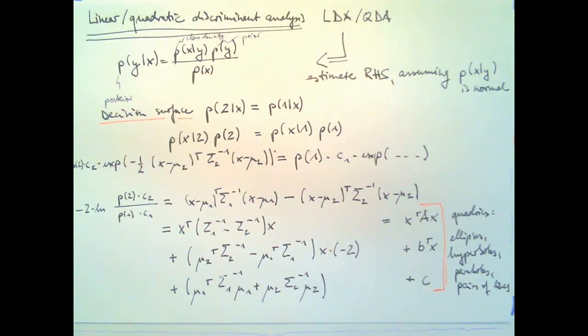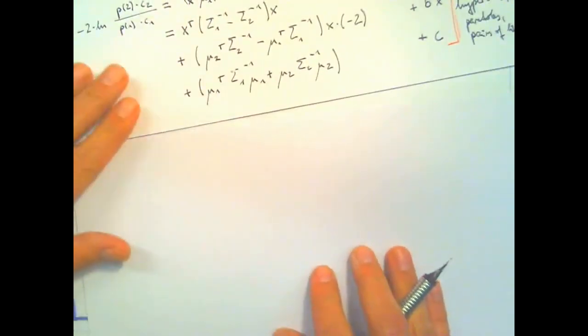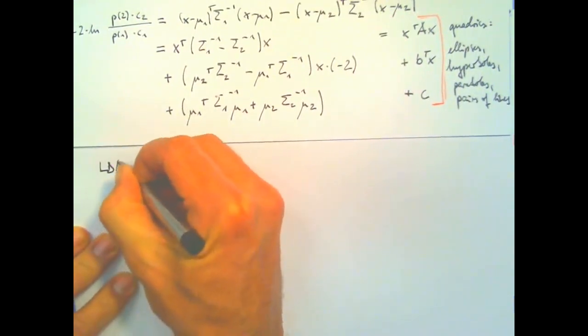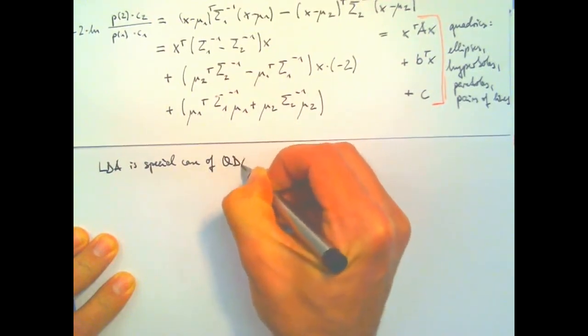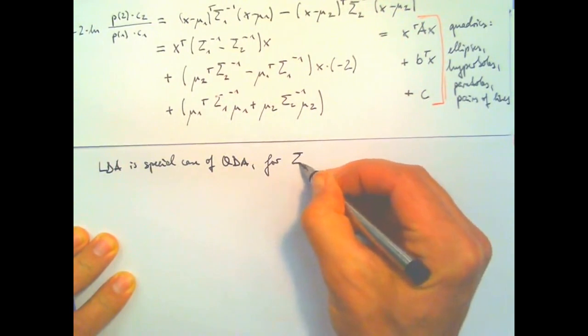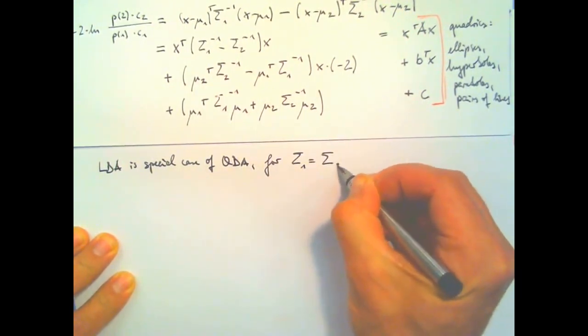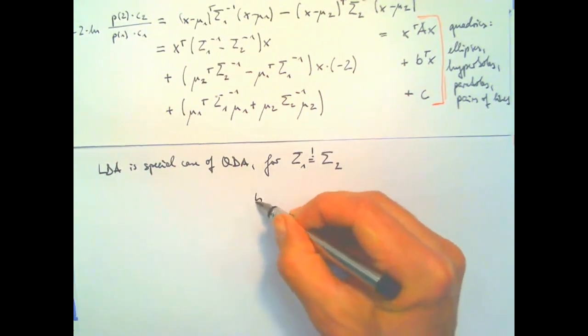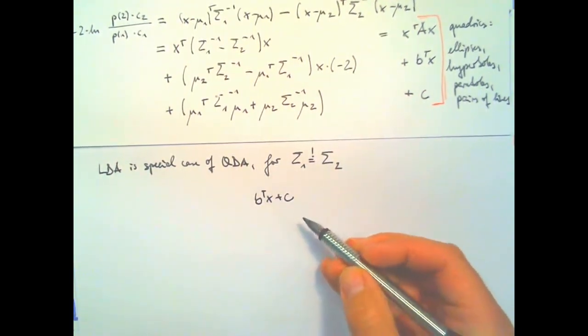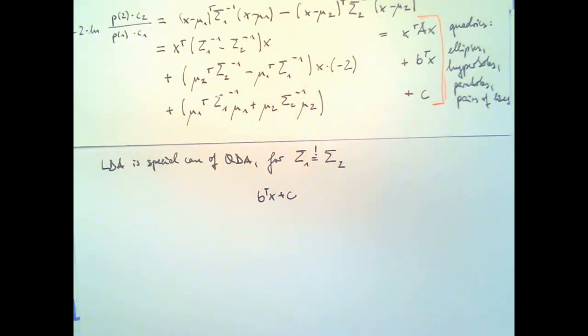So in other words LDA is a special case of QDA where you've assumed that the covariance structure of the two classes is the same. So in practice you compute a pooled covariance matrix and then as the name implies your decision surface then simply is of the form B transpose x plus c so it's just a hyperplane or a plane or in two dimensions just a line.